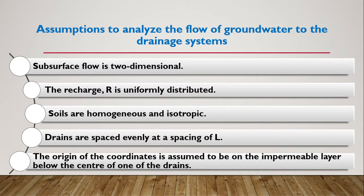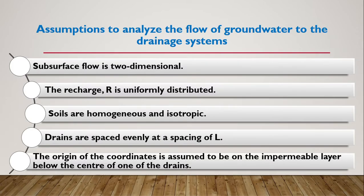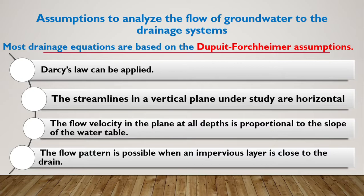The drains are spaced evenly at a spacing of L. The origin of coordinates is assumed to be on the impermeable layer below the center of one of the drains. The remaining assumptions are formulated by Dupuit and Forchheimer — two scientists who derived these important assumptions. Their assumptions were: Darcy's law is applicable, and the streamlines in a vertical plane are horizontal when water is flowing into the drain through a vertical plane.